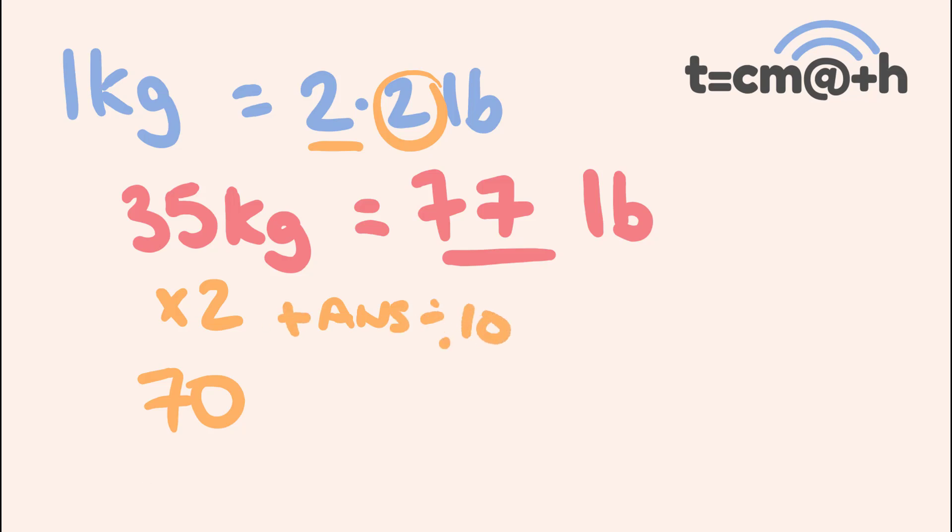Well, the answer is 70 divided by 10 is 7 and we're going to add that to 70 plus 7. This is 77 pounds. Pretty simple, right? What did you think of that particular trick?